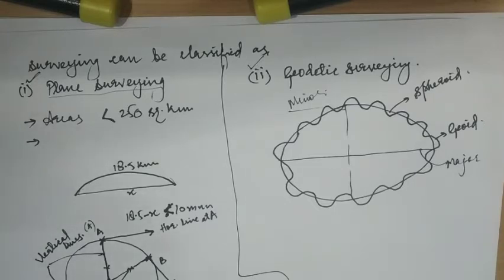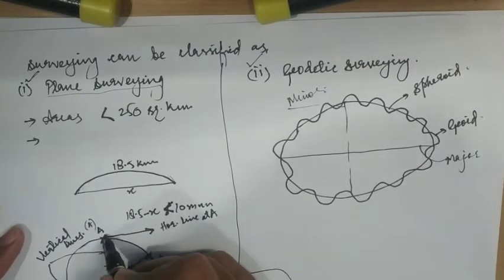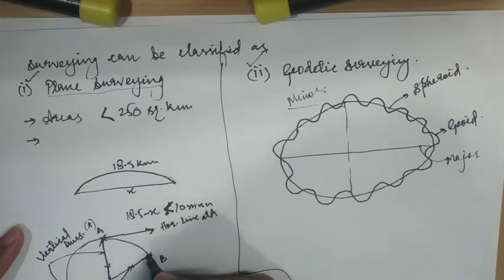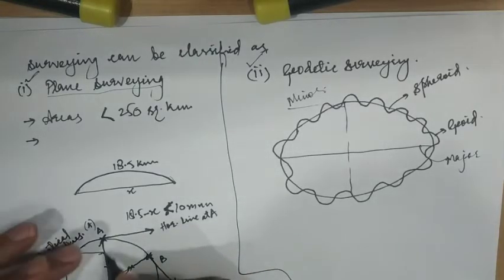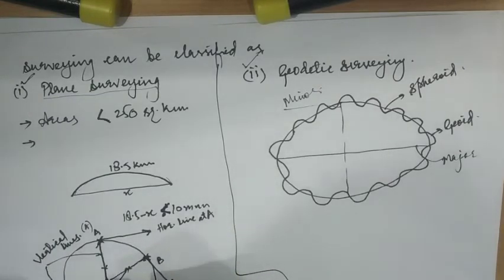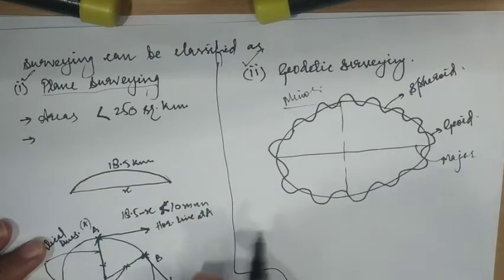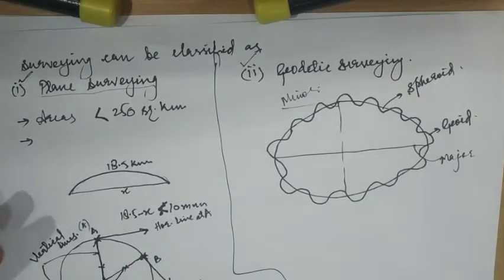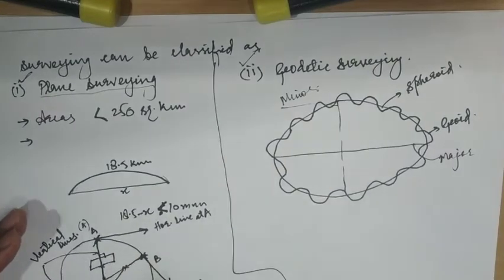A horizontal plane at a point is a plane which is perpendicular to the vertical line at that point. The vertical line is indicated by a freely suspended plumb line. From the diagram, you can see the earth's surface with two points A and B. If a plumb line is drawn, it passes through the center of the earth — lines AC and BC are called the vertical lines. Drawing tangents at points A and B gives the respective horizontal lines, and a horizontal plane is perpendicular to the vertical line passing through it.